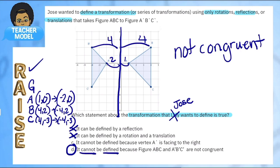So I'm going to go with D. It cannot be defined because they are not congruent. That I absolutely know is true. They are not congruent.